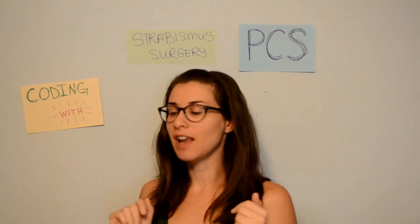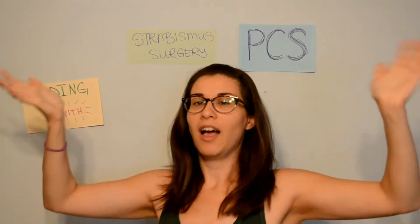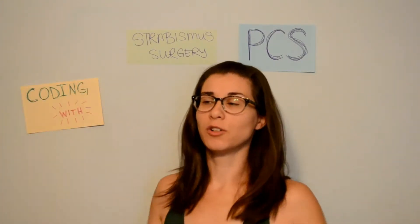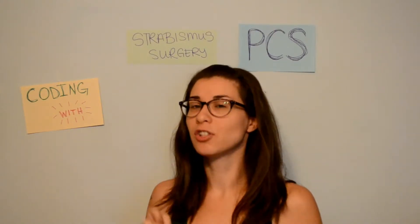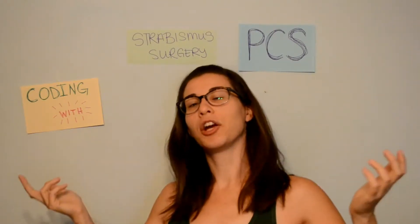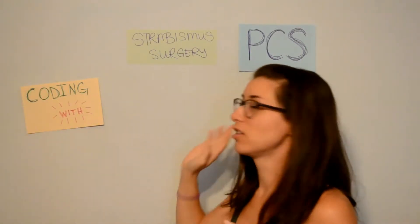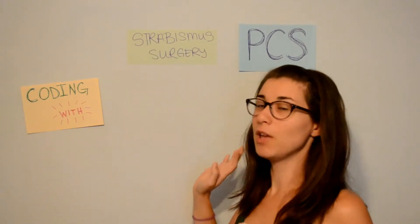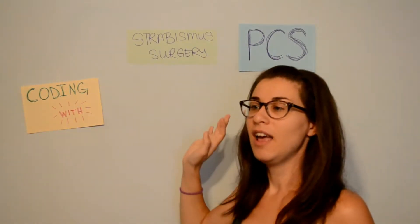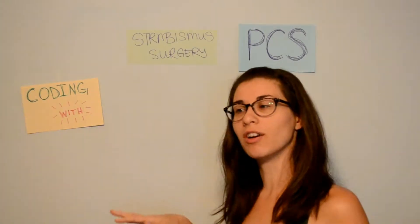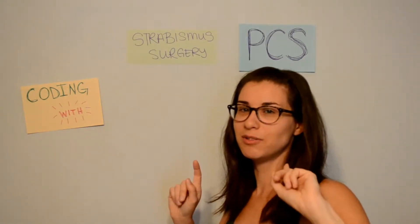I thought it would be an interesting experiment, and I will note that I haven't come across this procedure in any of my practice books, so I had to go online and ask other coders what they would code for this. Because I found that with strabismus surgery, there are two types of surgeries that can happen, so I wasn't entirely sure what the root operation would be. Today we are going to be talking about those two root operations and the procedure in general — what the surgery looks like, the anatomy of the eye, what is actually being operated on, and what root operations could or could not be applied.